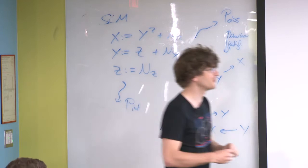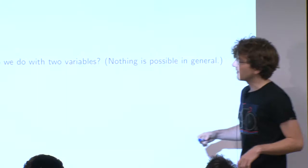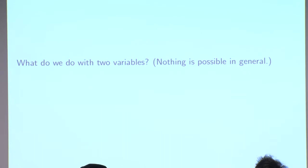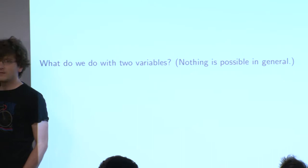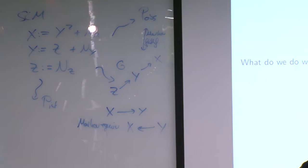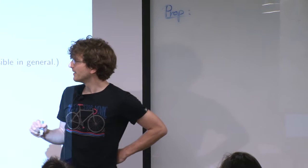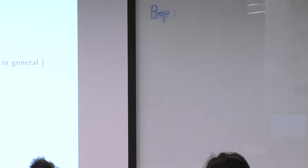So, what do we do if we only have two random variables? We have seen that independence-based methods fail here — this is a particularly difficult case. If you look at the structural causal model, there is an impossibility result. Given a joint distribution over X and Y, you can always find a structural causal model — for example, with the graph X causing Y — that explains exactly this distribution.